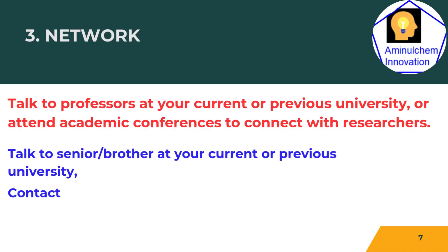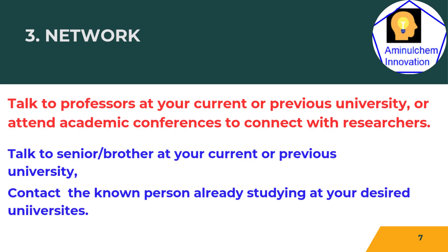Then comes networking. Networking can often help you find an MS or PhD supervisor. For example, talk to a professor at your current or previous university, or attend academic conferences to connect with researchers. Also talk to your senior colleagues at your current or previous university about finding a probable supervisor. An important thing is to contact known persons already studying at your desired university, because those doing MS or PhD there know who will take future students. You can collect email addresses from them and approach supervisors for your MS or PhD. Networking helps a lot.